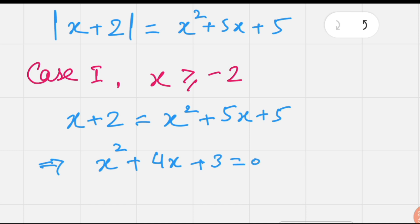Subtracting x + 2 from both sides, we have a new quadratic equation: x² + 4x + 3 = 0.